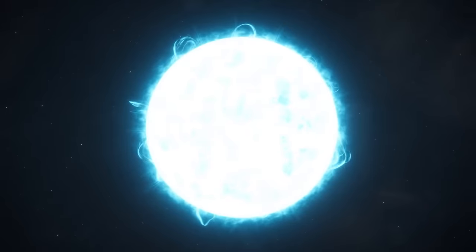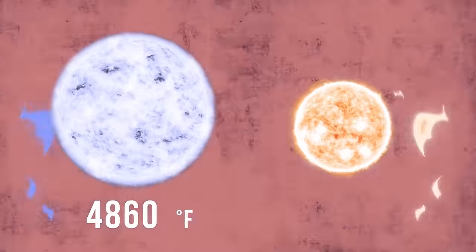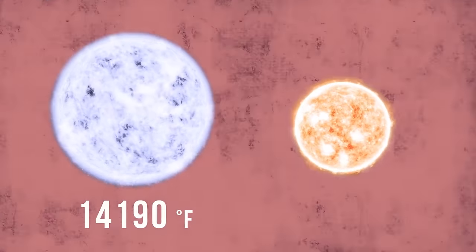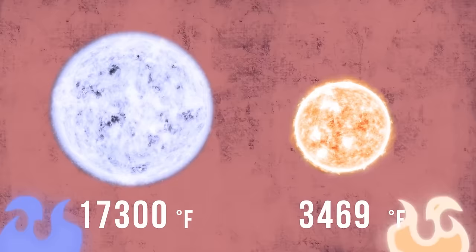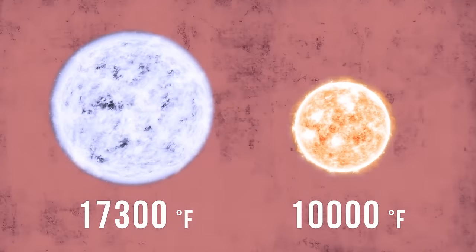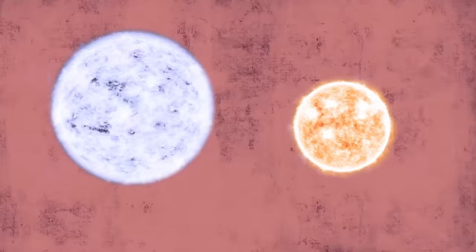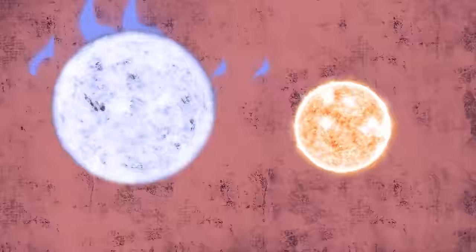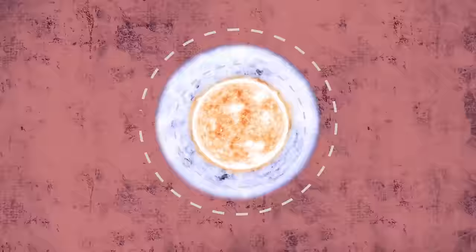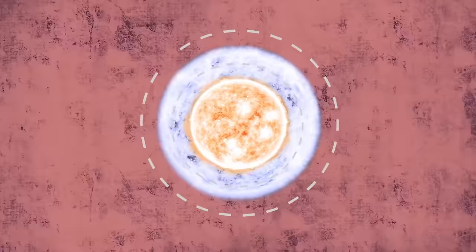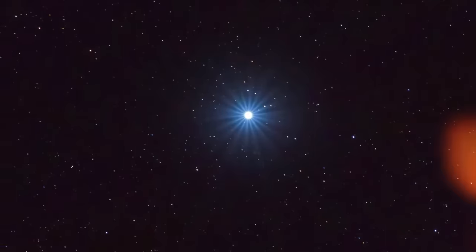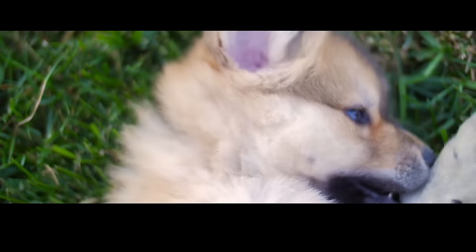It's twice as bright as its competitor, Canopus, located in the southern constellation Carina. Being the most brilliant, Sirius is very easy to identify. Probably the coolest thing about this star is that it seems to be changing its color.